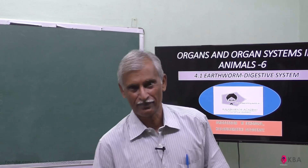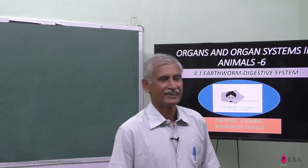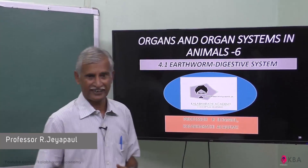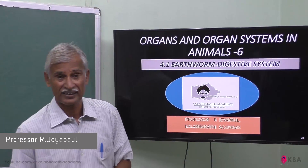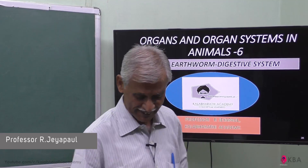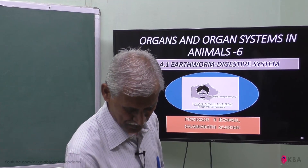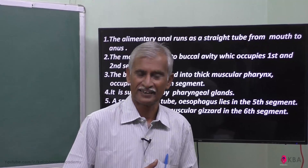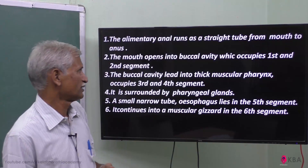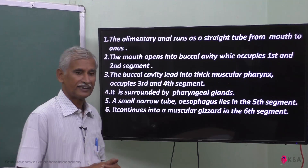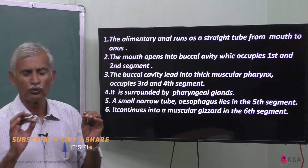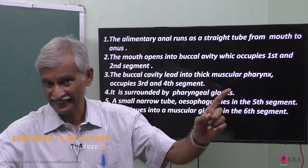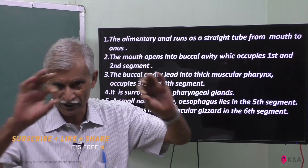Welcome to Kalabarith Academy. Digestive system. First segment: Prostomium, that is the mouth. In an alimentary tract, it is a simple tubular structure from mouth to anus — a single tube.